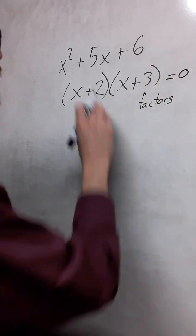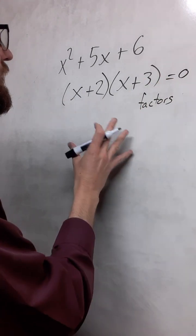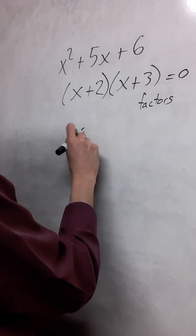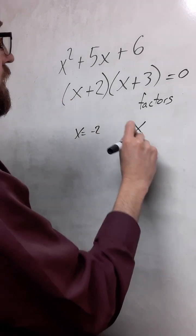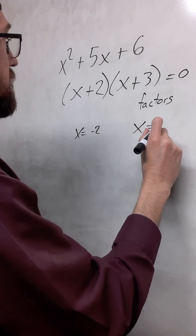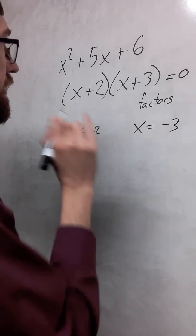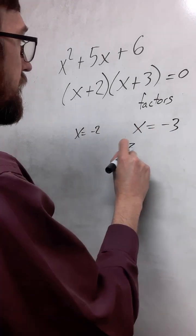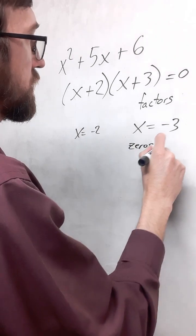If we set this equal to 0, we can solve each of these as separate cases and find out that x is equal to negative 2 and x can also be equal to negative 3. These are known as zeros for the function.